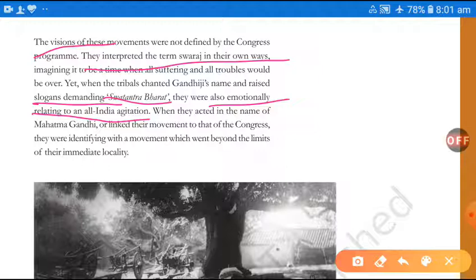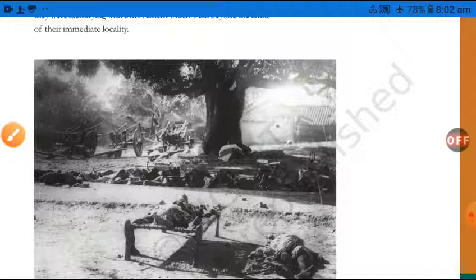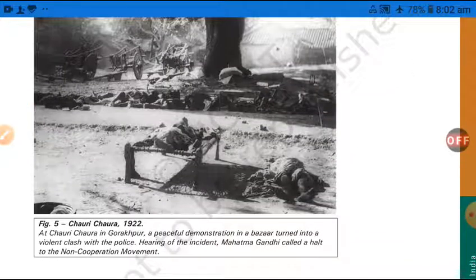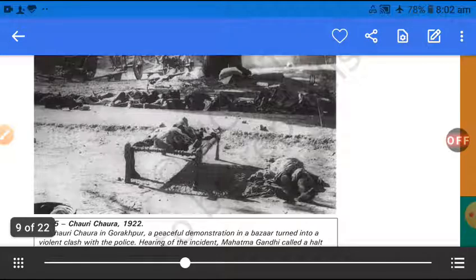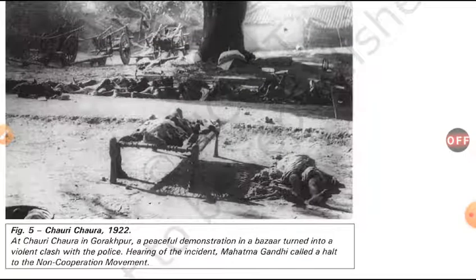So when they acted in the name of Mahatma Gandhi and linked their movement to that of the Congress, they were identifying with a movement which went beyond the limits of their immediate locality. When they connected their movement to Gandhi's and Congress's movement — which went beyond their own limits — they accepted becoming part of the Congress movement, crossing the boundaries of their immediate locality. Even though they were not directly involved, they had indirectly participated and played their role.